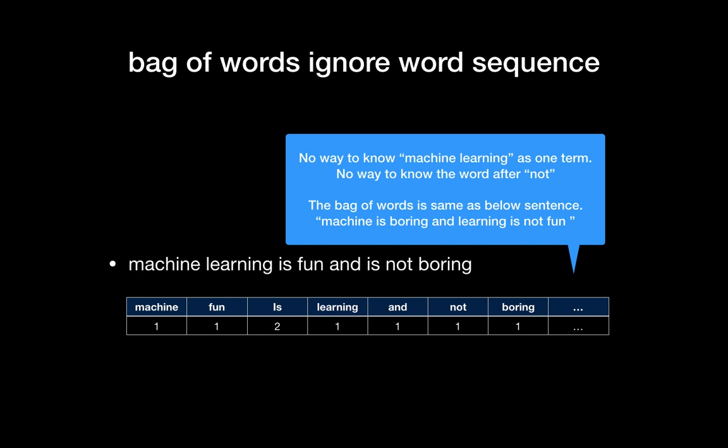And also we don't know if 'not' is followed by 'boring' or 'not' is followed by 'fun.' So this sentence is exactly the same as 'machine is boring and learning is not fun' in the bag of words. So in this case, we can try with bigrams.